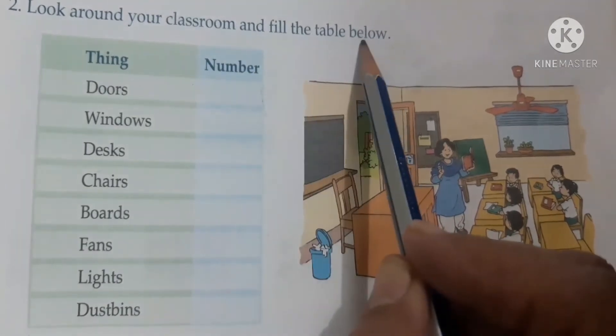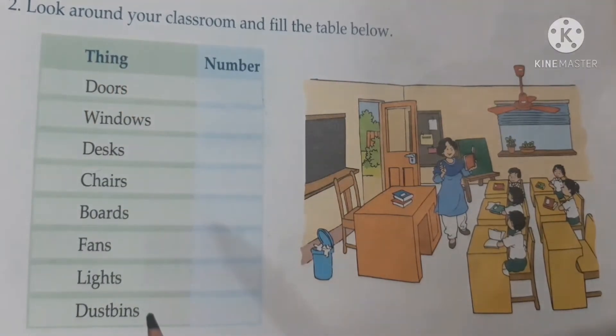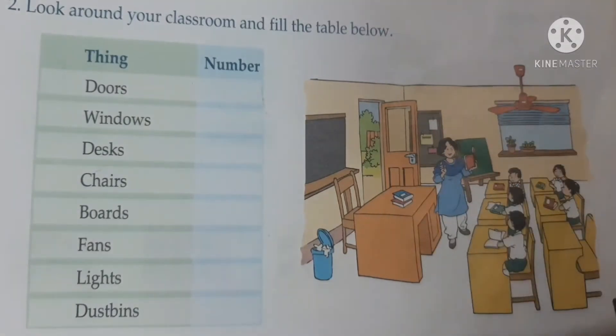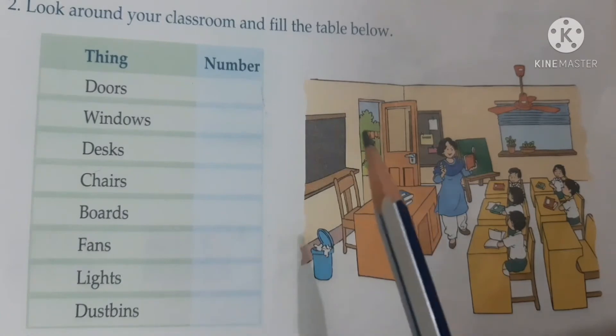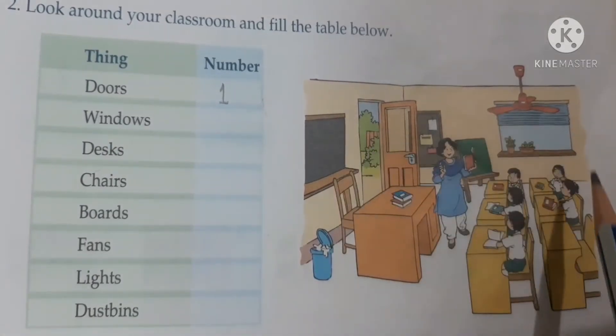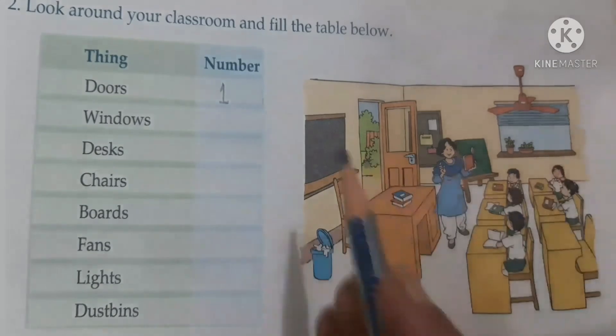The next question is: look around your classroom and fill the table below. Here is a list of things and you have to write how many of each are there in this classroom. First — doors. In this classroom, one door is there, so you will write one. Second — windows. Only one window is there, so you write one: number of windows, one.